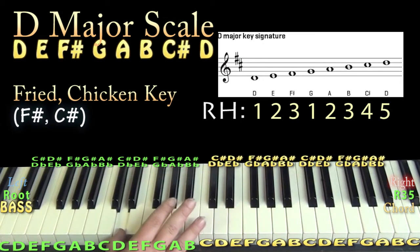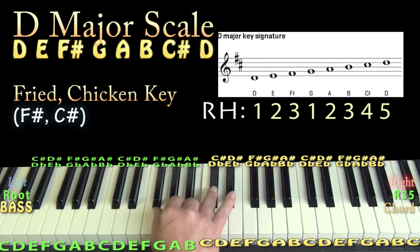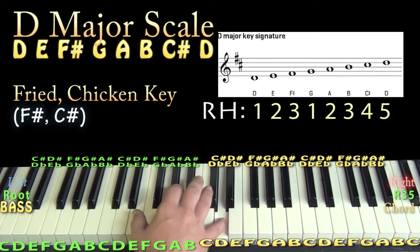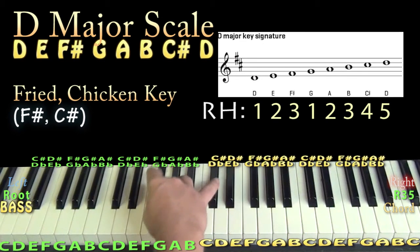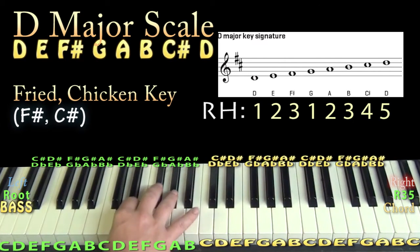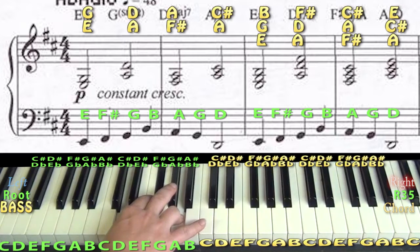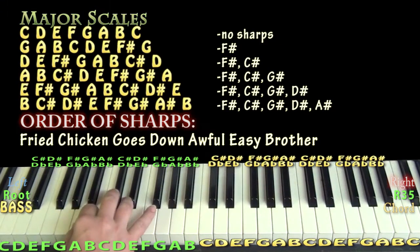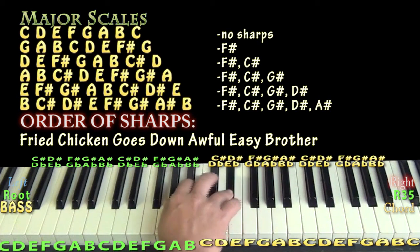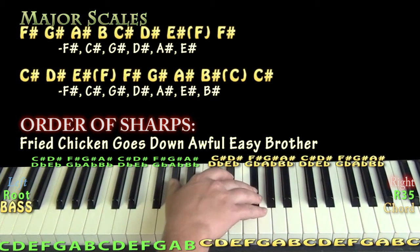With two sharps, D is what sounds like 'do': D, E, F sharp, G, A, B, C sharp, D. I'm using a one-two-three fingering with my right hand, then doing a thumb-under to the G and laying out one through five. If you saw three sharps you're in A major, four sharps is E major, five is B major, six is F sharp major, and seven is C sharp major.